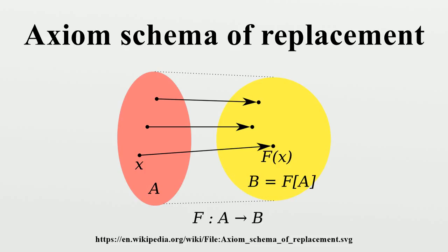Skolem's formulation: let U be a definite proposition that holds for certain pairs in the domain B. Assume further that for every A there exists at most one B such that U is true. Then, as A ranges over the elements of a set M_A, B ranges over all elements of a set M_B. In the same year, Fraenkel wrote a review of Skolem's paper, in which Fraenkel simply stated that Skolem's considerations correspond to his own. Zermelo himself never accepted Skolem's formulation of the axiom schema of replacement. At one point he called Skolem's approach 'set theory of the impoverished.' Zermelo envisaged a system that would allow for large cardinals, and also objected strongly to the philosophical implications of countable models of set theory, which followed from Skolem's first-order axiomatization.